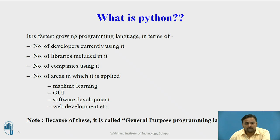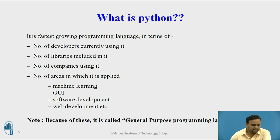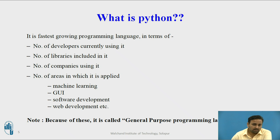The second reason is the number of libraries included in Python. Because it is an open source programming language, anybody can make changes and release their own version, which may be helpful to a lot of communities. That's why the number of libraries is increasing day by day. The third reason is the number of companies using it — a lot of MNCs are currently using this programming language.